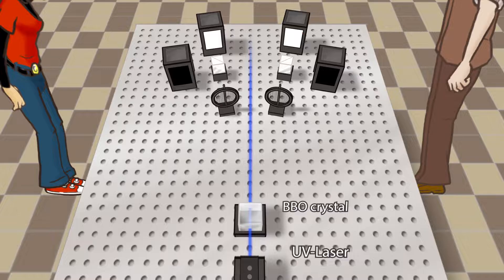Alice and Bob each define the respective vertical and horizontal measuring axis by adjusting their polarization rotators.